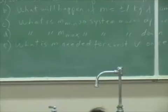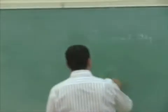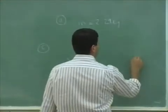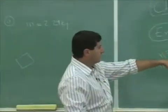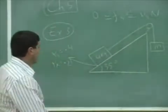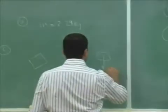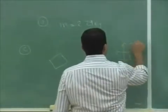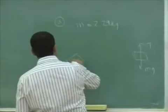So in order for the system to move up the incline, here are the forces on the hanging mass. We have the Mg. We have the tension T.